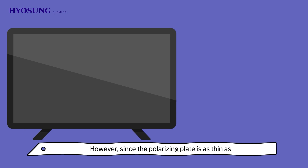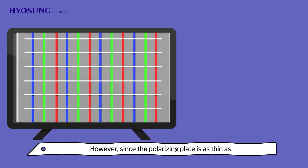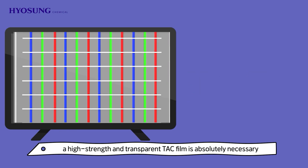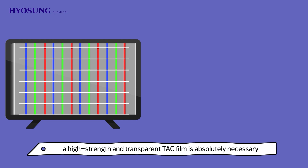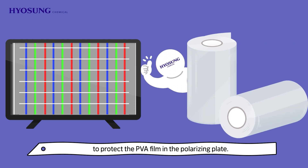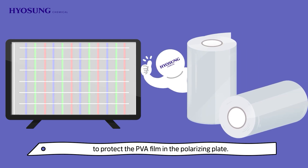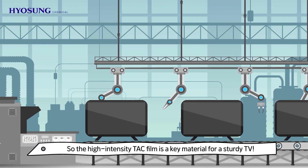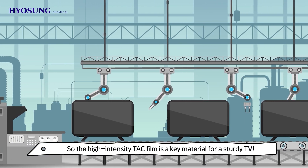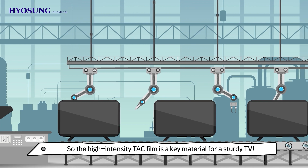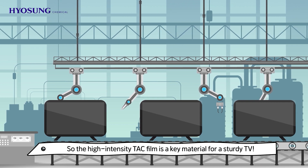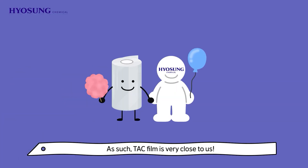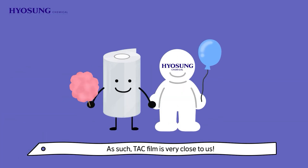However, since the polarizing plate is as thin as two or three hair strings, it needs high-strength and transparent protective TAC film. The high-intensity TAC film is a key material for a sturdy TV. As such, TAC film is very close to us.